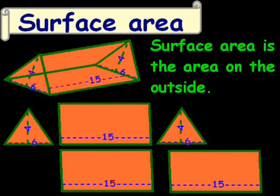Now, what we're going to do for the surface area is calculate the area of each one of these sides and figure out what that total area is. And we'll add them all together.